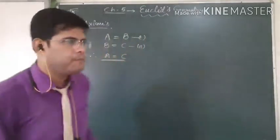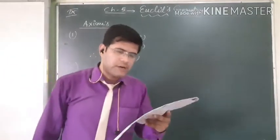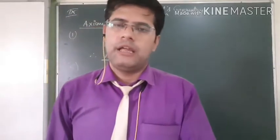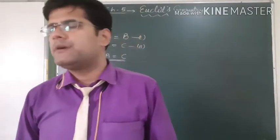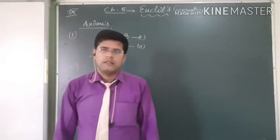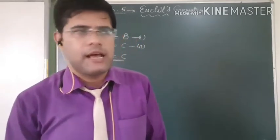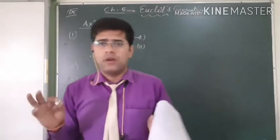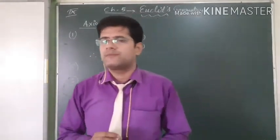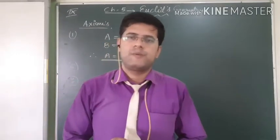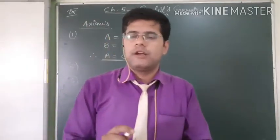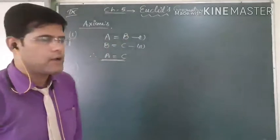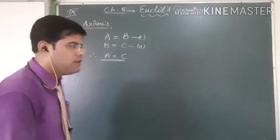The third axiom: if equals are subtracted from equals, the remainders are equal. If A person has 500 rupees and B person has 500 rupees, both live in different places and spend 200 rupees each on a taxi — both have 300 rupees left. When we subtract equal amounts from two equal things, the answer will be equal.